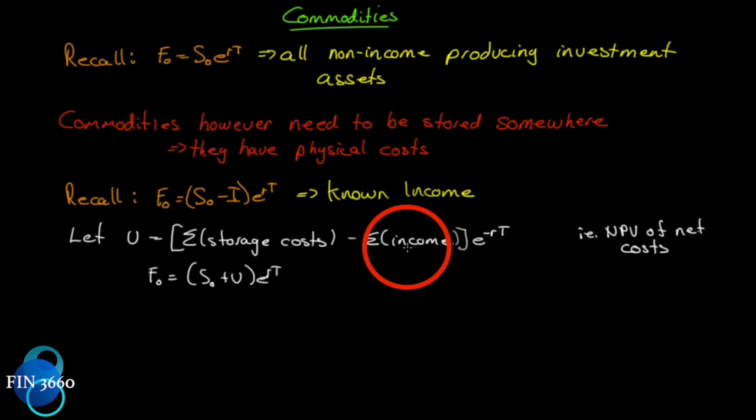So it's the sum of the storage costs minus the sum of the income. For most physical commodities, they don't really produce income. Gold and silver - the precious metals - are exceptions; they're called investment assets. But for the vast majority of commodities you'll be looking at, they don't really produce income. So it's fair to say that the storage costs will be greater than the income, so there'll be a cost associated with that. We'll let U be the sum of the storage cost minus the sum of the income.